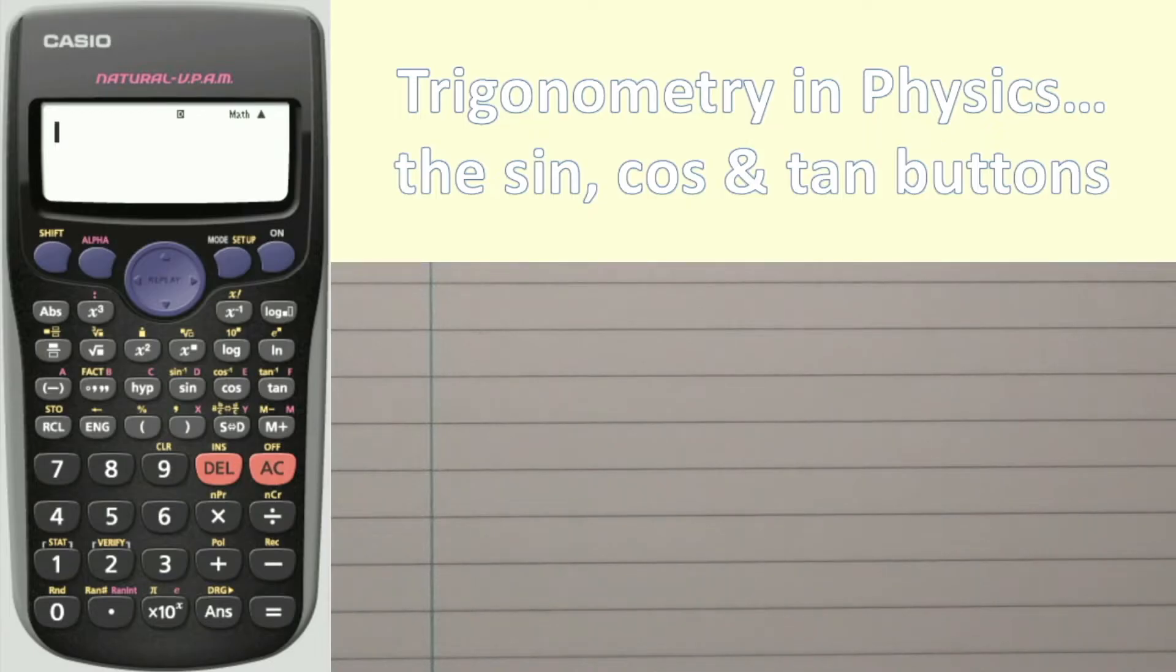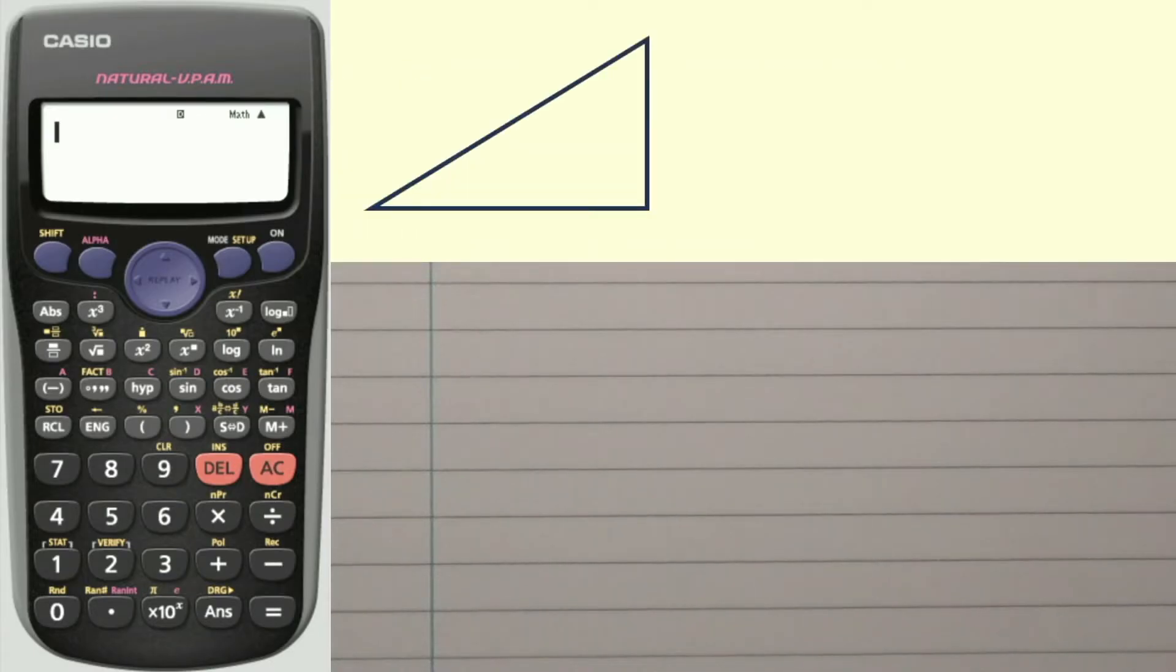Let's take a look at a right-angle triangle. So if we want to calculate this angle within the triangle, then we call this side the opposite side because it's directly opposite the angle. Now the longest side, that's what we call the hypotenuse, and the final side is called the adjacent.